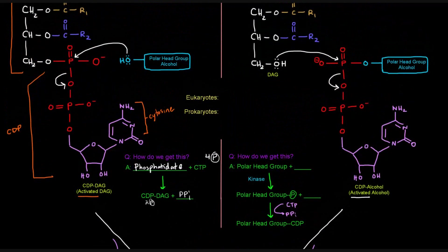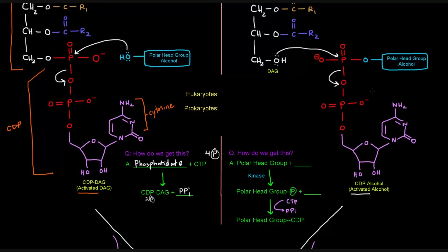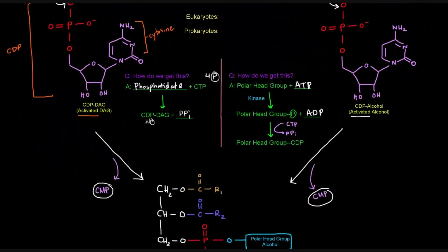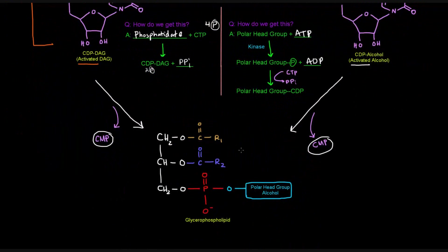You might ask how we got that CDP-alcohol. We start with a polar head group alcohol and invest ATP with a kinase, and one of those phosphates gets attached to the polar head group, leaving ADP. Then CTP can be invested, and the polar head group has the CDP portion attached to it with two phosphates, and a pyrophosphate leaves. In either case, either method gives us the same molecule — a glycerophospholipid.